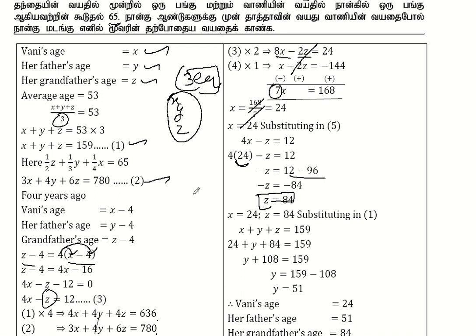Substituting into equation 1: x plus y plus z equals 159. With x equals 24 and z equals 84, we get 24 plus y plus 84 equals 159. That is 108 plus y equals 159, so y equals 159 minus 108, which is 51. Therefore, x equals 24, y equals 51, and z equals 84.